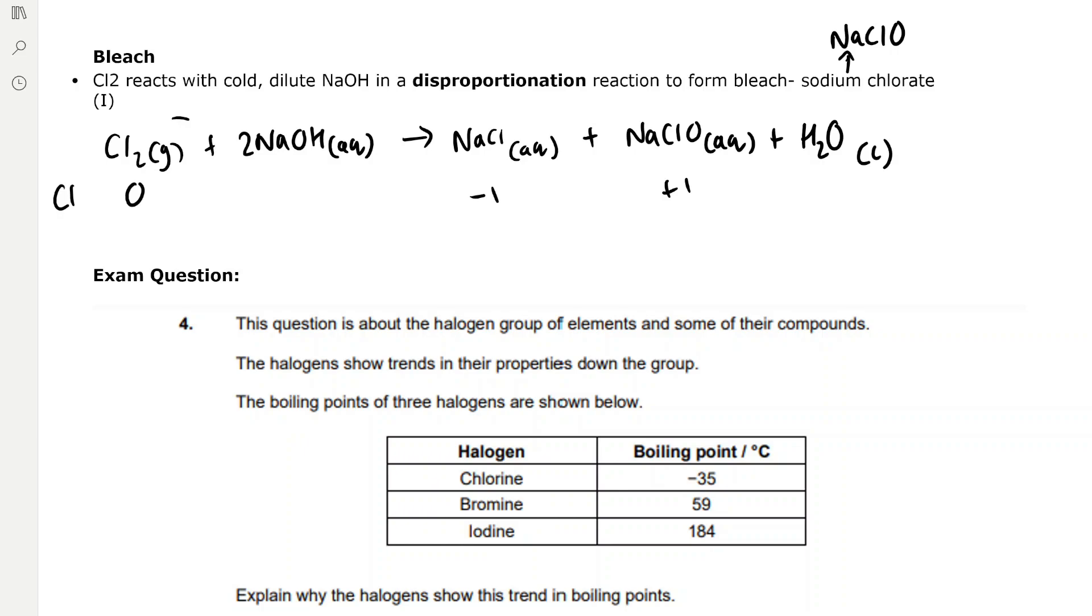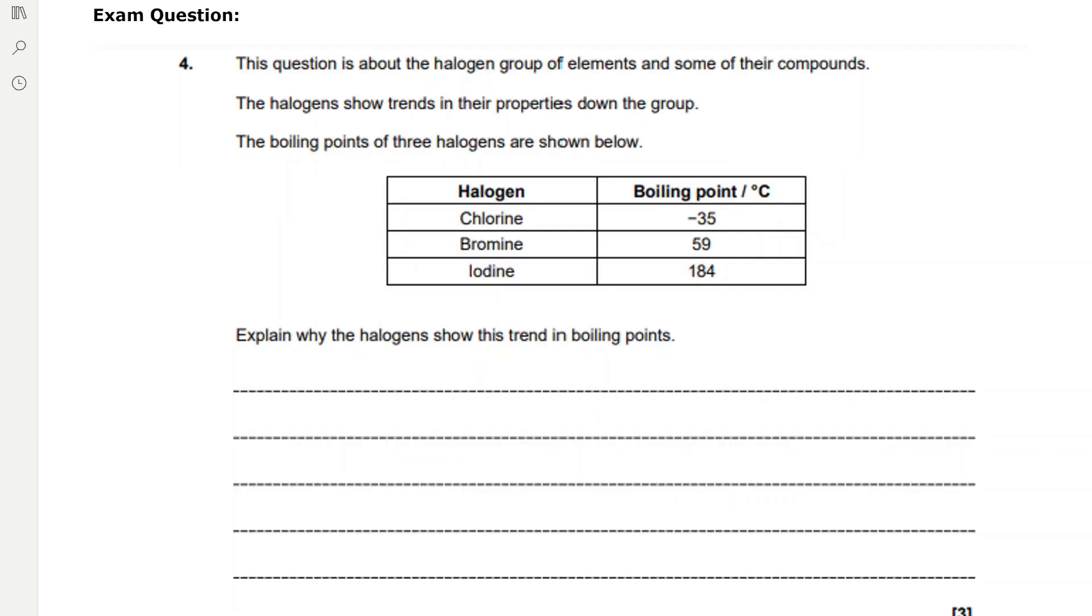This question is about the halogen group of elements and some of their compounds. The halogens show trends in their properties down the group. The boiling points of three halogens are shown below. Explain why the halogens show this trend in boiling point.